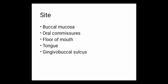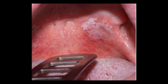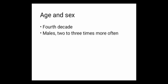The sites most commonly involved are the buccal mucosa, oral commissures, floor of mouth, tongue, and gingivobuccal sulcus. This diagram shows leukoplakia on the buccal mucosa.